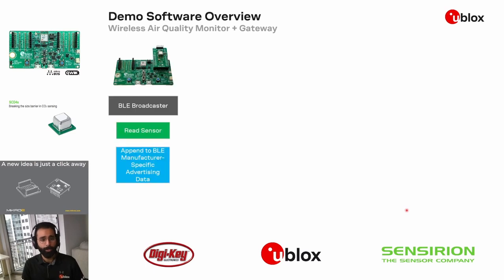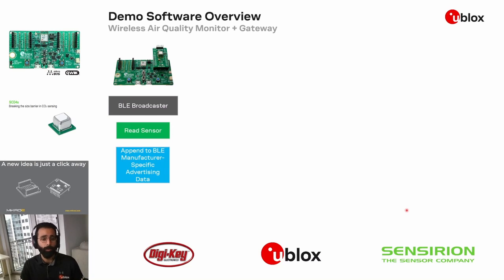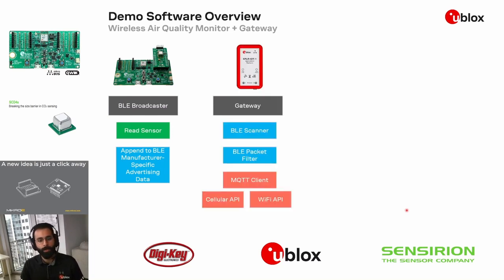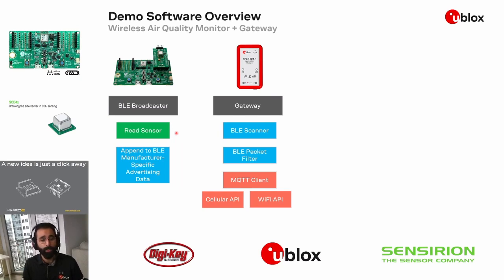For the software architecture, we'll start with the NORA mini board with the sensor plug-in card, which will be used as a BLE broadcaster. It's going to periodically read the sensor over I2C and then append that data to the manufacturer-specific advertising data in each packet, transmitted about every 10 seconds — configurable by the user. That data is received by a BLE scanner app running in the gateway, which filters out unnecessary packets. We're also leveraging native support of Censurion's drivers on Zephyr OS to read from the SCD41 on the click board.